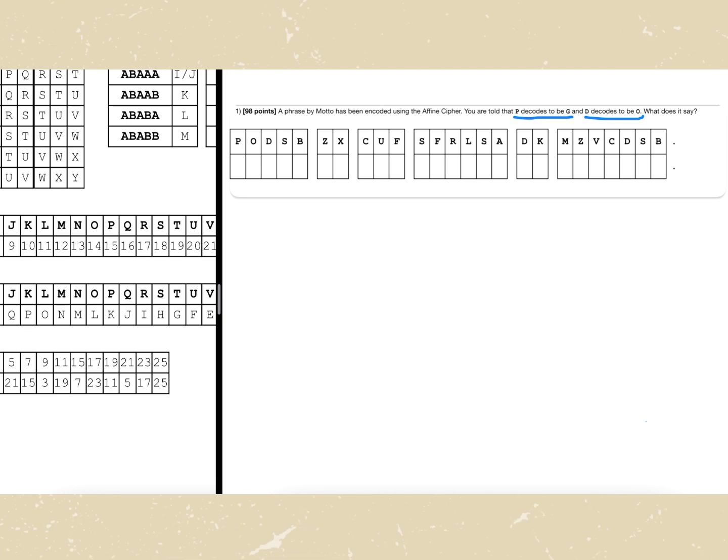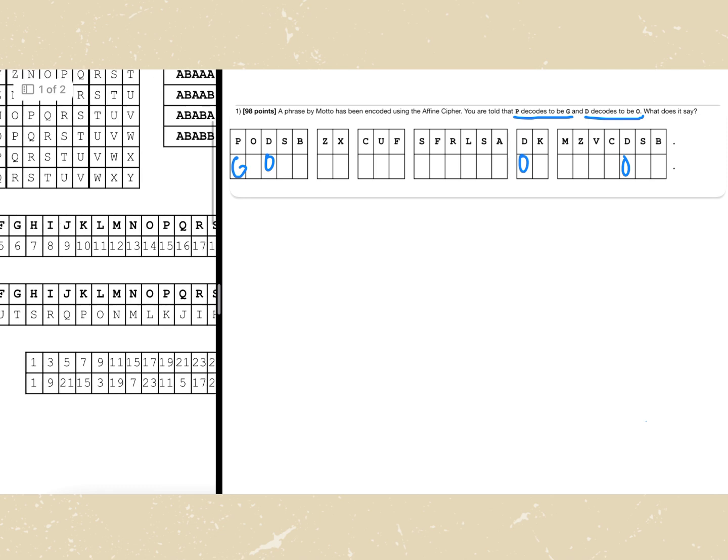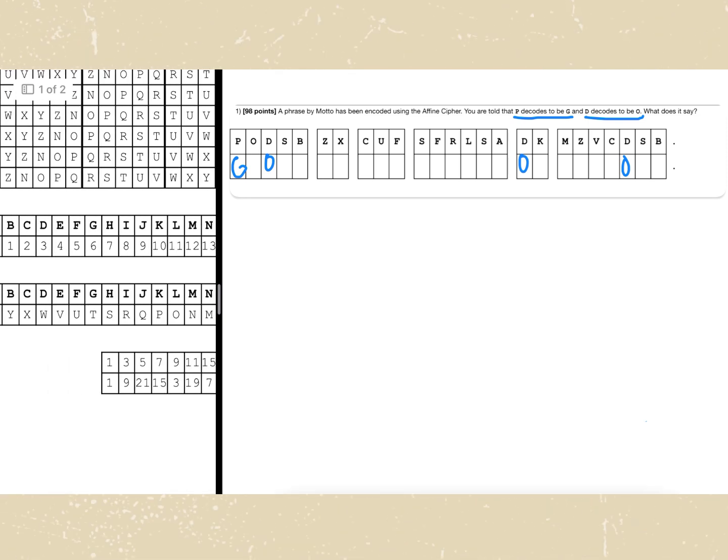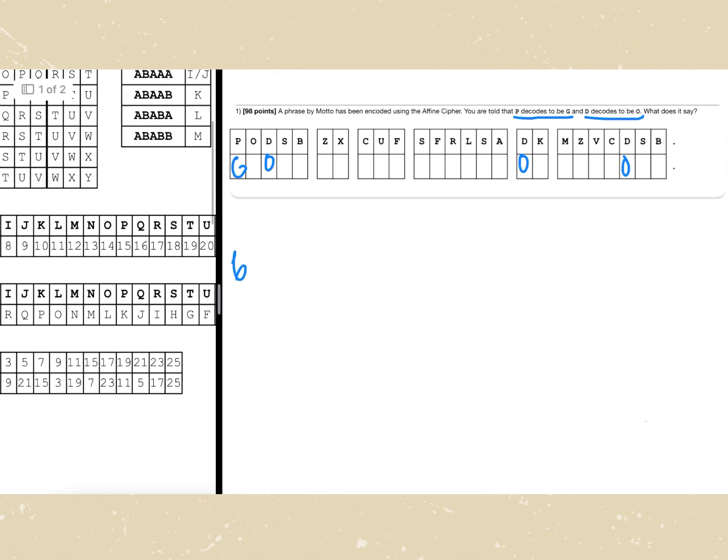So what I mean by that is if we start solving for the a value, we want to ensure that we're not trying to find a pattern or anything, it is complete math. So let's start by putting in our values already into our cipher. So p decodes to be g right here and d decodes to be o. So let's also write these out into a math type of format.